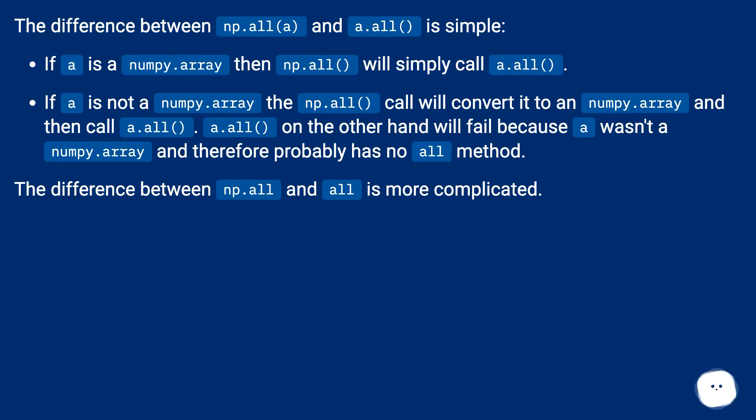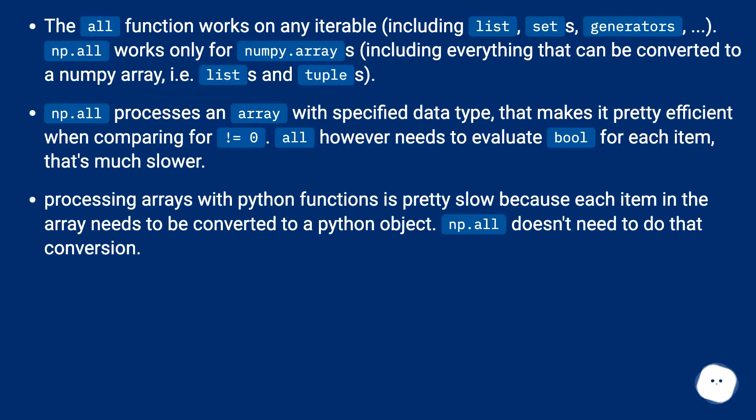The difference between np.all and all is more complicated. The all function works on any iterable, including list, sets, and generators.